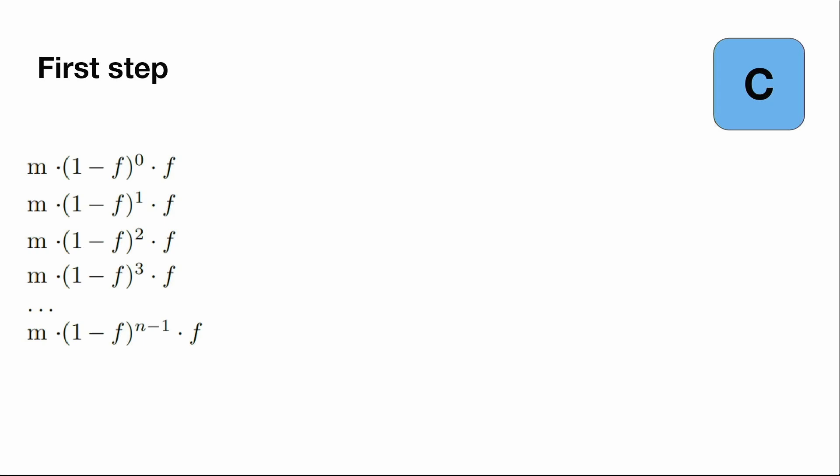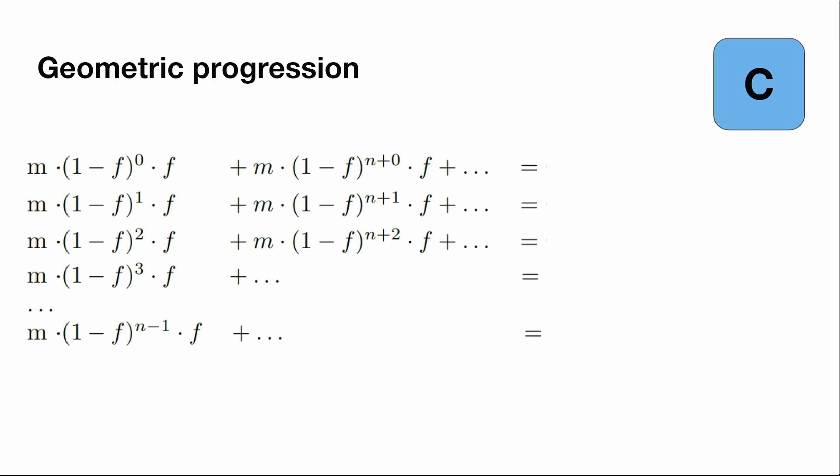At first, let's see what will be on the first round. The first pirate will get exactly m multiplied by f, and you can see it on the screen. Then let's see the next step. We can notice that this is a geometric progression, so we can compute the sum of this geometric progression.